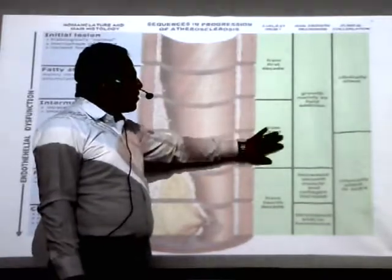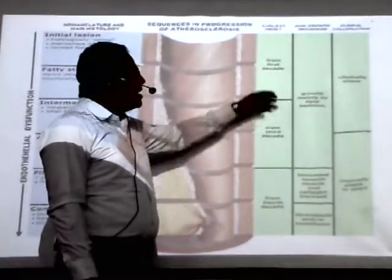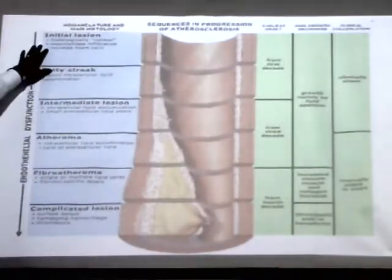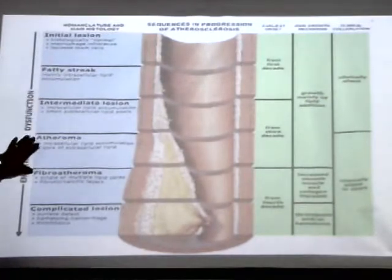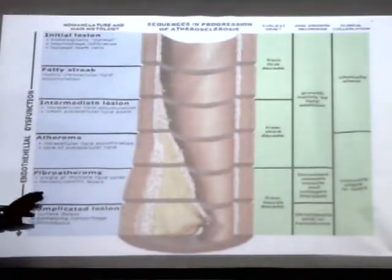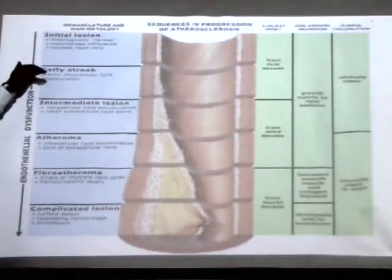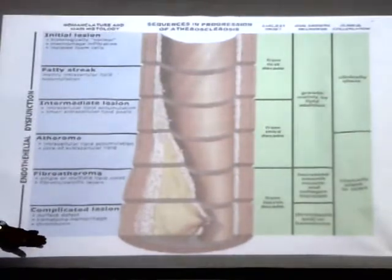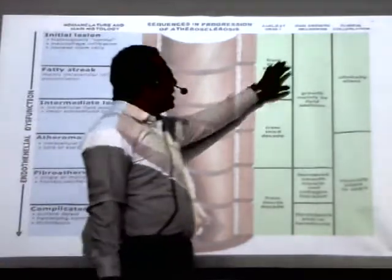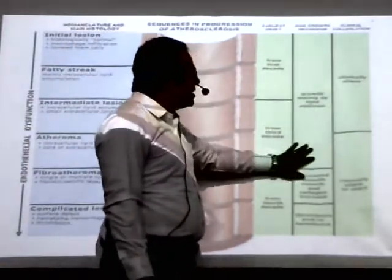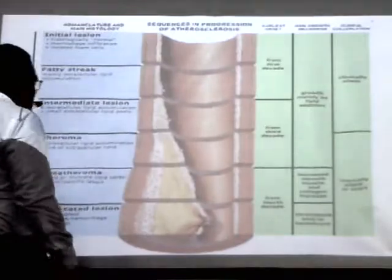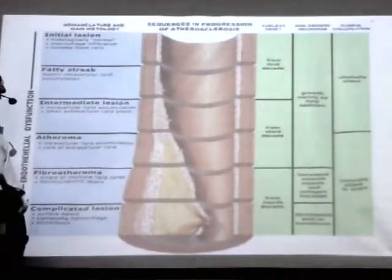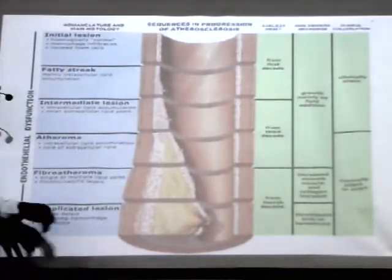The column defines stages of life — the first decade, third decade, and fourth decade, that is 10 years, 30 years, and 40 years of age. Here they have defined the main histological changes and names of the stages: initial lesion, fatty streak, intermediate lesion, atheroma, fibro-atheroma, and complicated lesion, along with the mechanism by which these stages develop and their clinical manifestation.